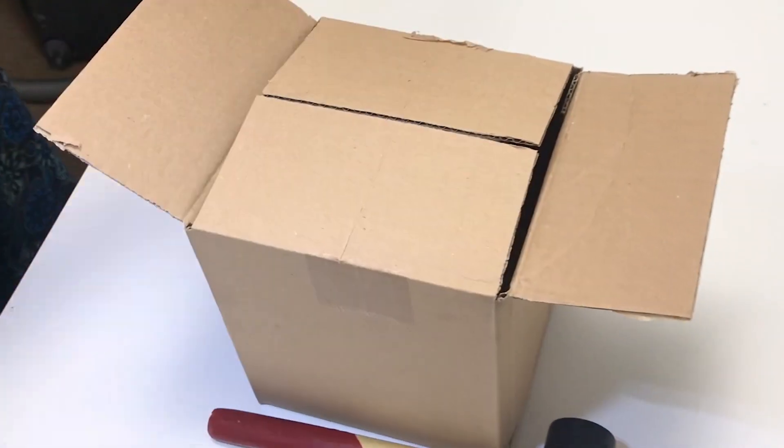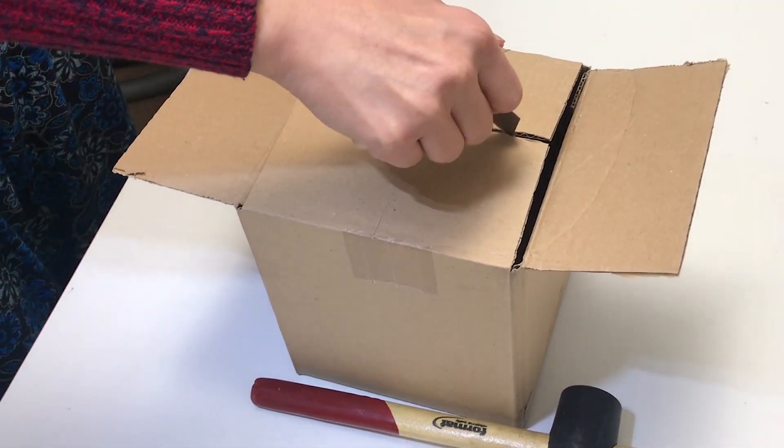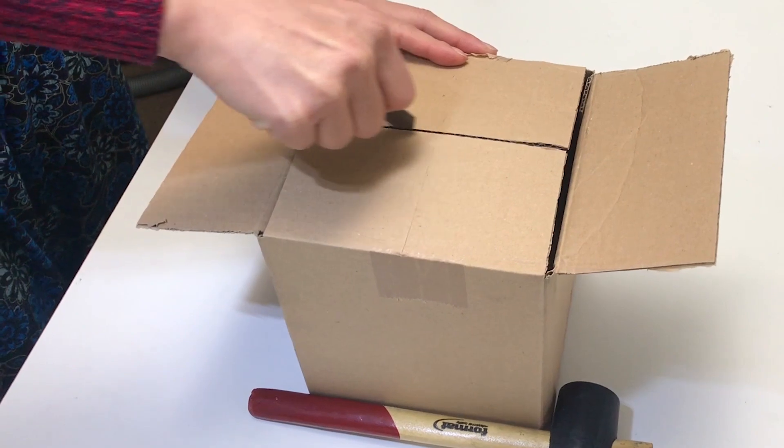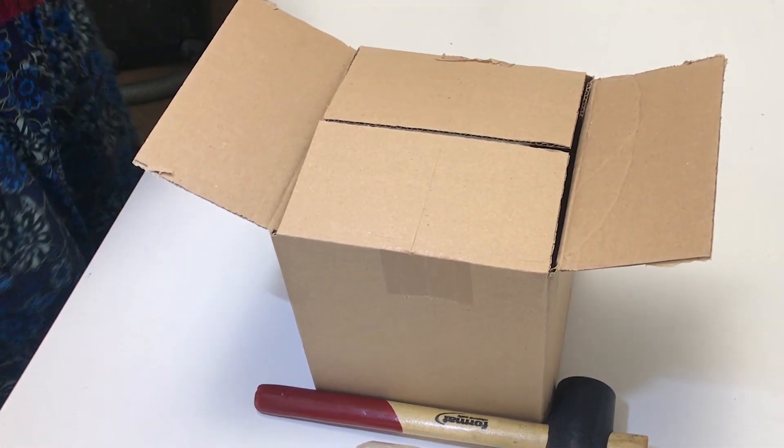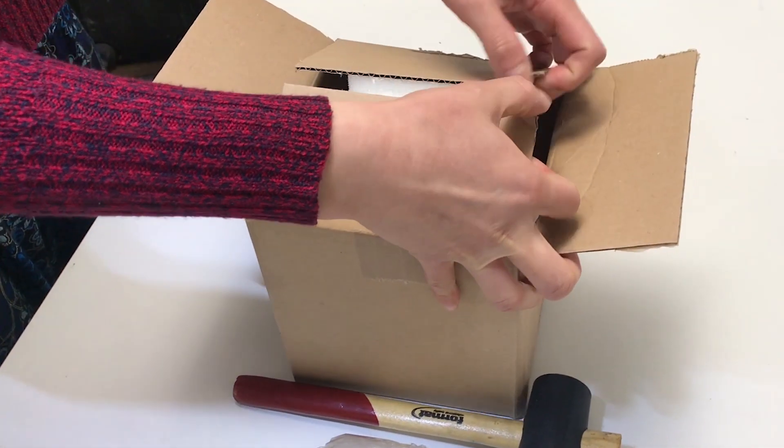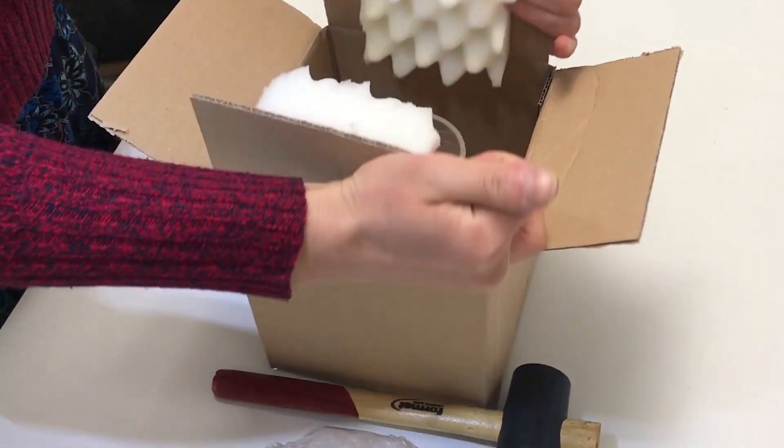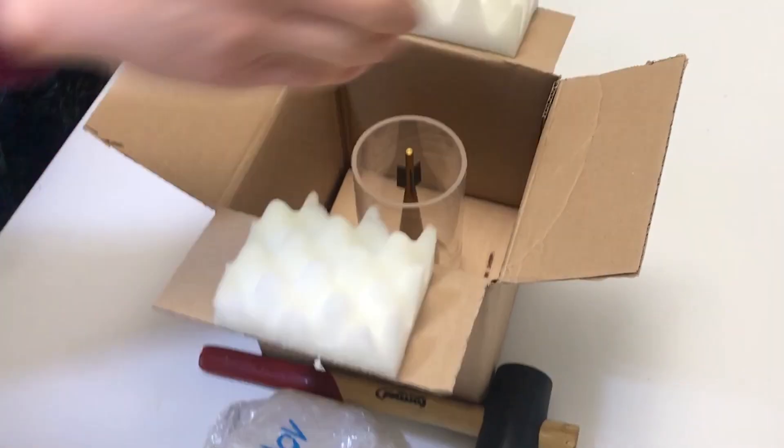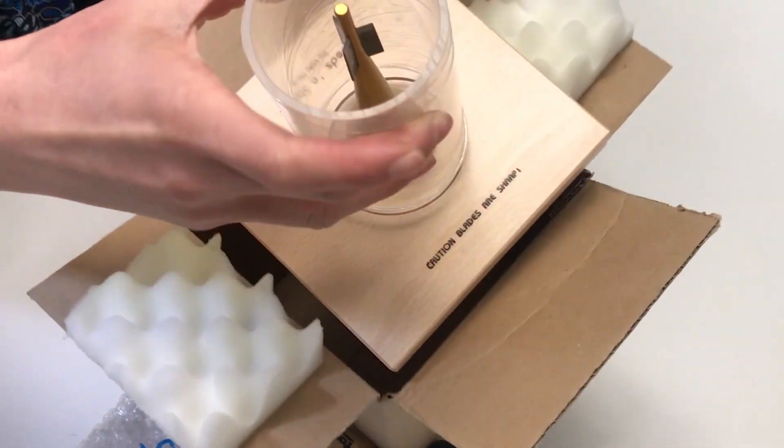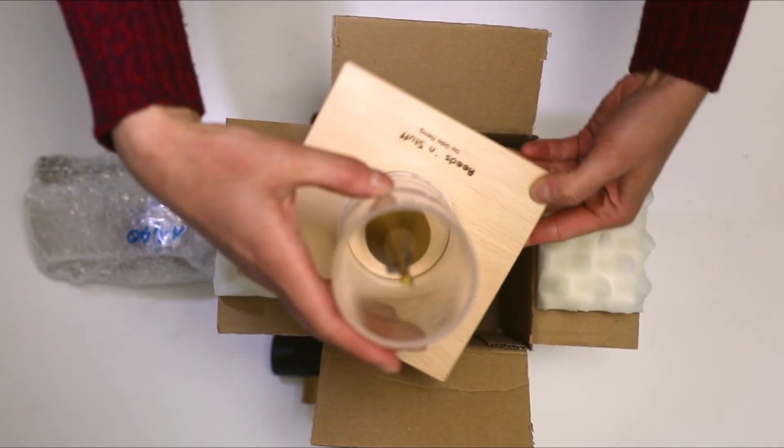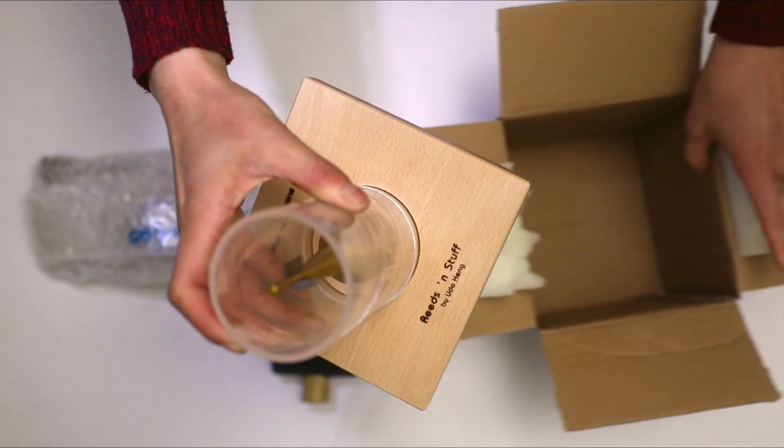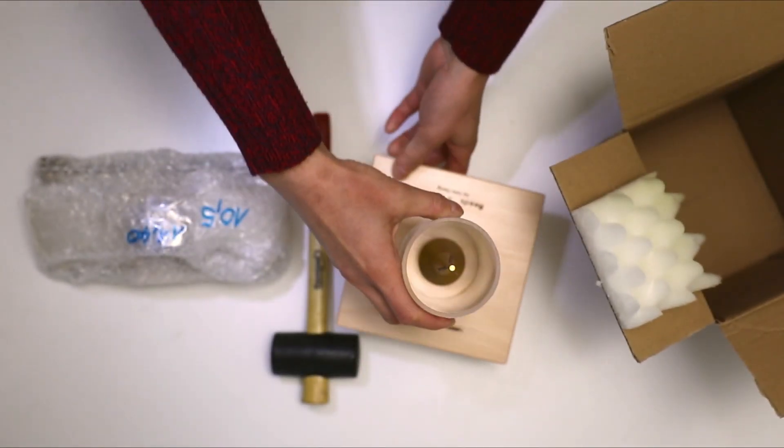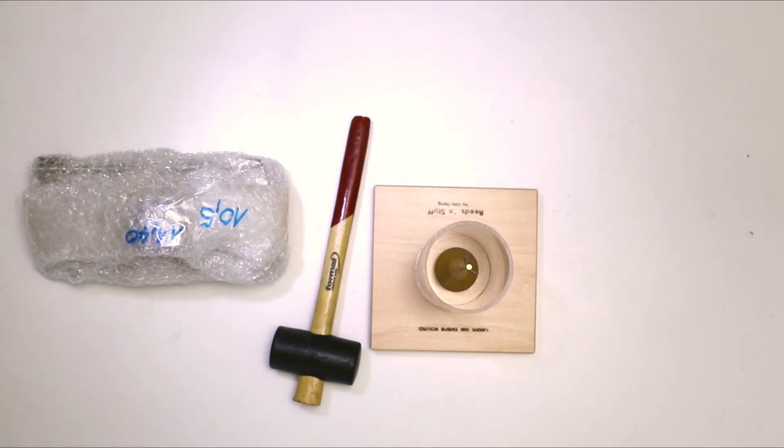Here as you can see, I'm unboxing the cane splitter. This is by the company called Reeds and Stuff. And right beside it on the table is the hammer that comes together with it.